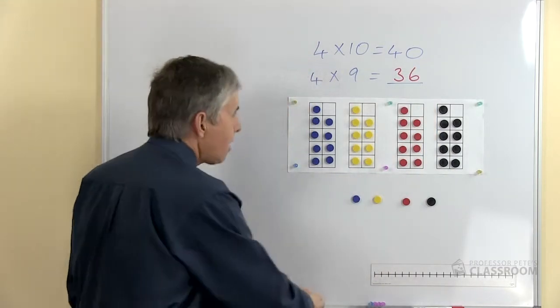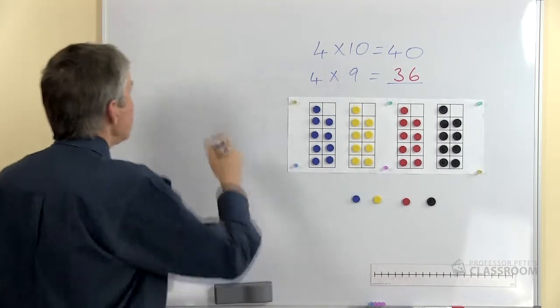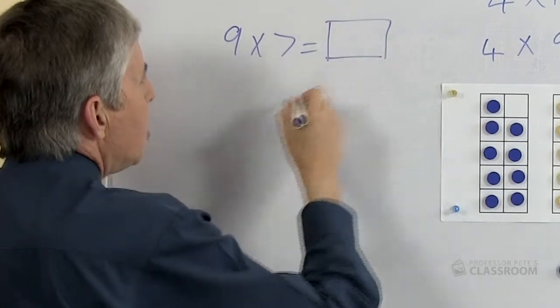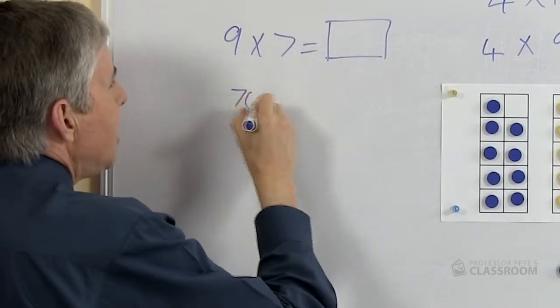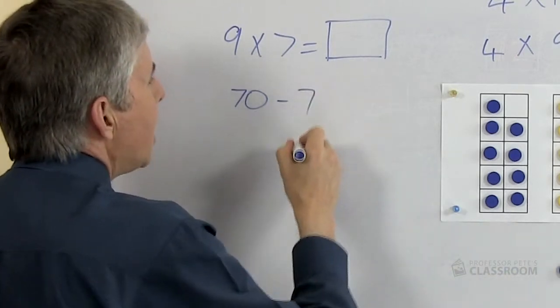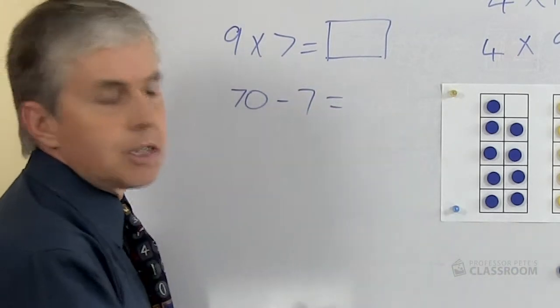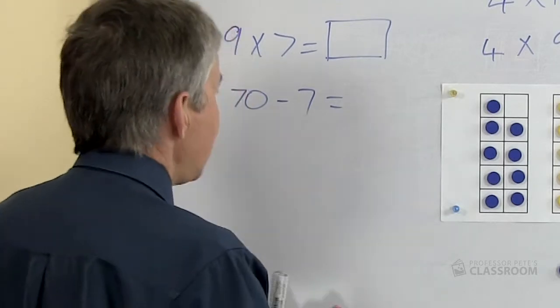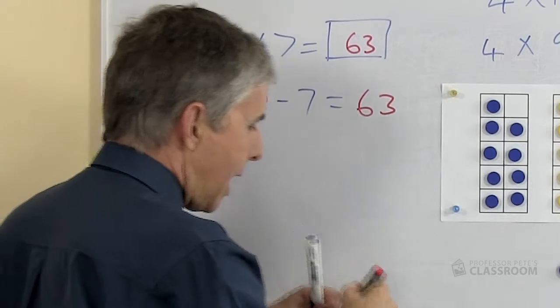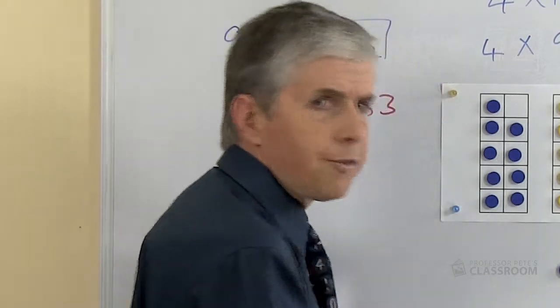So we could use that for any nine times number fact. Here's an example: nine times seven equals what? Well, if we think of ten times seven is seventy and we're going to take away seven ones. What is seventy take away seven? Of course the answer is sixty-three, so that will be that answer. So that's the first pattern.